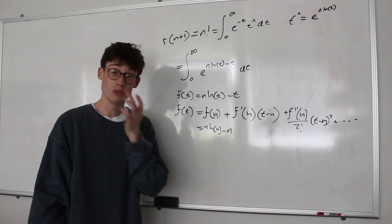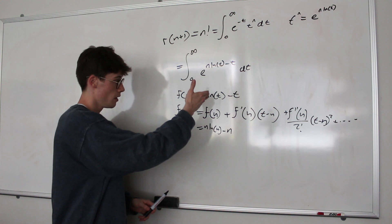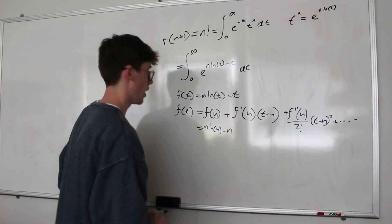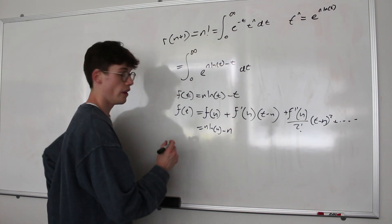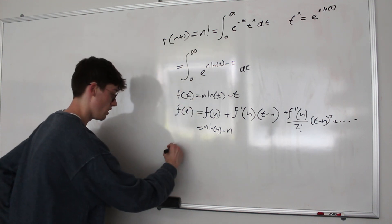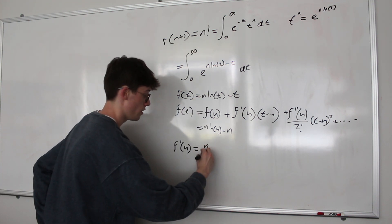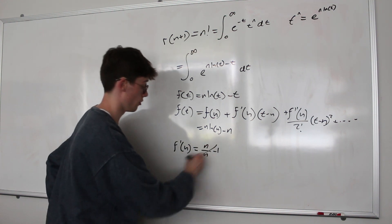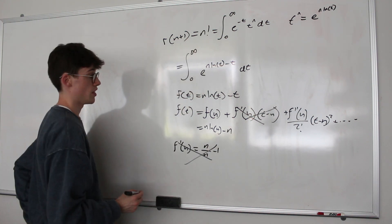Differentiating this function is also relatively simple. Don't forget we're differentiating with respect to t. The derivative of n ln t with respect to t is just n over t. And of course the derivative of negative t is just negative 1. Now when we evaluate this at n, that means that f prime of n is equal to n over n minus 1, which is 1 minus 1, which is 0. And so we can completely ignore this term in our Taylor expansion, seeing as it just goes to 0.